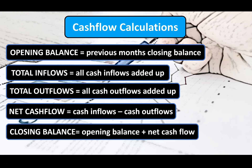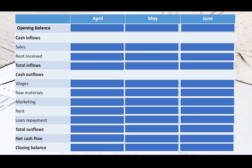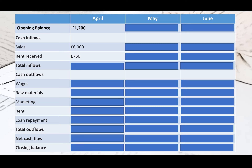So, the cash flow forecast we are going to work through is for a three-month period between April, May and June. Let's imagine we are now in March trying to predict what our cash flow will look like over the next three months. At the start of April, we begin with an opening balance of £1,200. Moving on to cash inflows — which are sales and rent of an office space — we receive sales income of £6,000 and rental income of £750. Our total inflows, calculated by adding all inflows together, come to £6,750 for April.